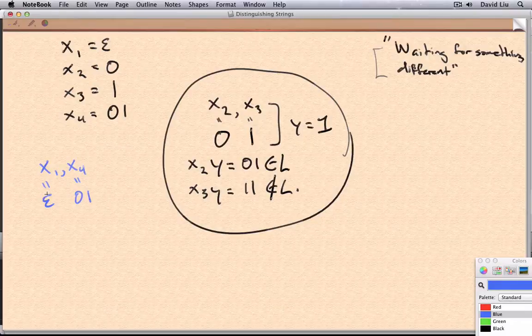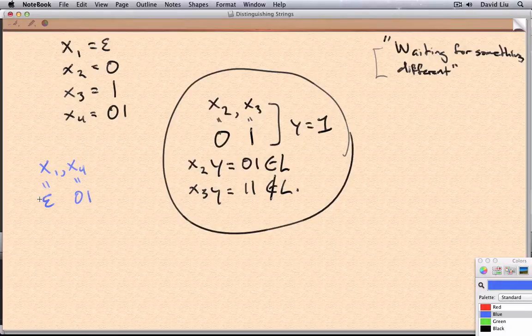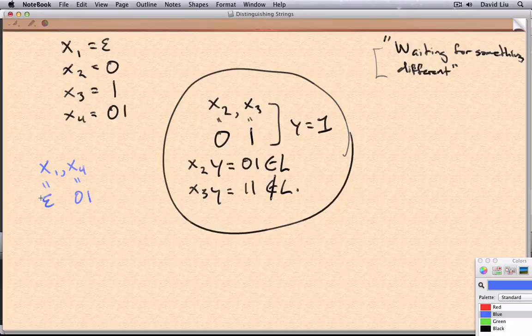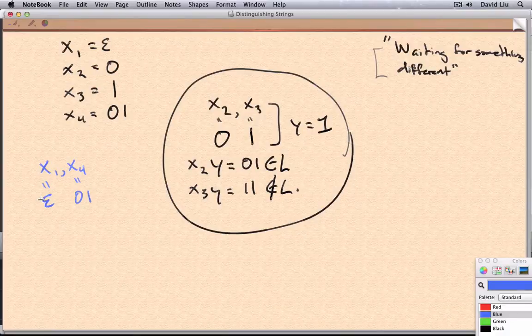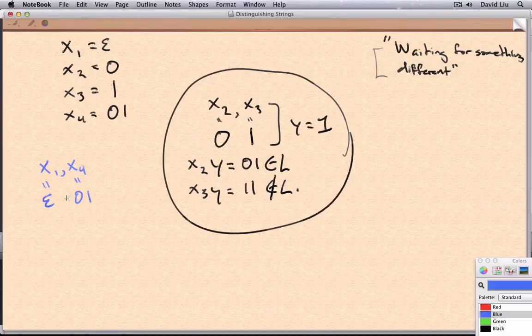So when we look at what epsilon is waiting for, we can say, oh, well, it's waiting to see if the next two characters are going to be 01. And we know that if the next two characters aren't 01, then it's not going to be in the language. But that's not true for X4, and that's very helpful.